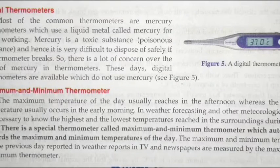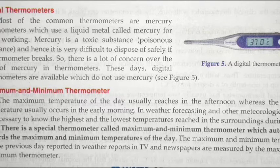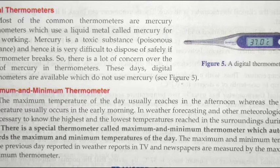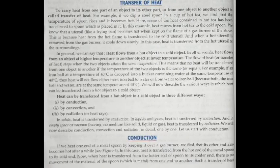There are also other types of thermometers, like the Digital Thermometer, which does not use mercury. The second type is the Maximum and Minimum Thermometer — a special thermometer that automatically records the maximum and minimum temperature of the day. This is mostly used in daily weather reports shown in newspapers and TV channels.